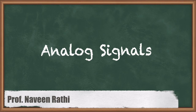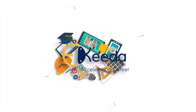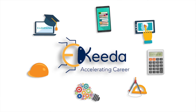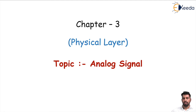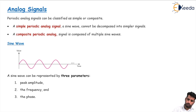Hello students. In chapter 3, Physical Layer, our next topic is about analog signals. In the previous topics we discussed what is data and what is signals. Now in this topic we will discuss about analog signals — how we represent an analog signal and what are the main characteristics of an analog signal. Analog signals can be classified as simple or composite.